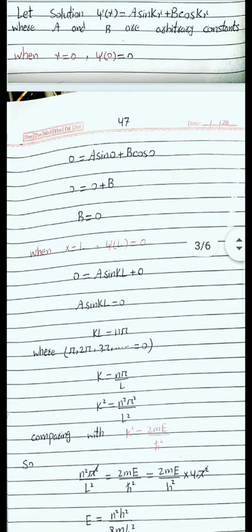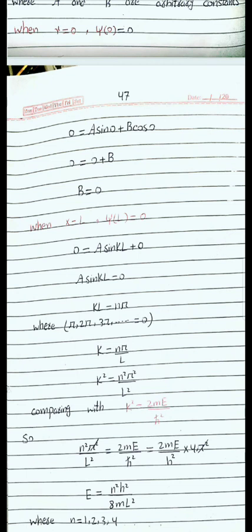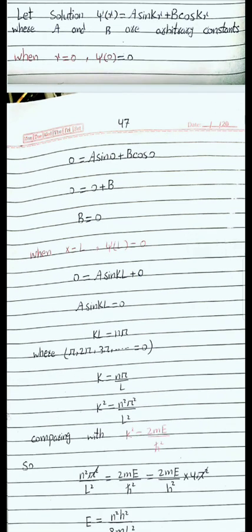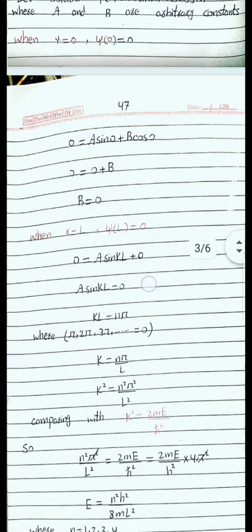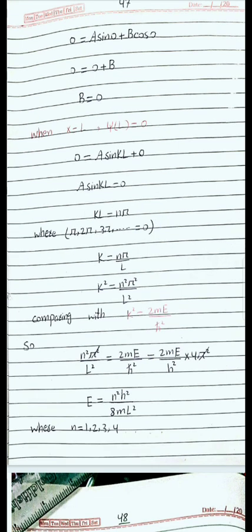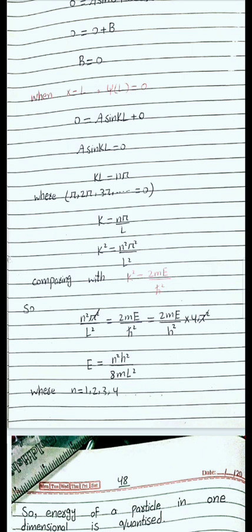Now we apply the second boundary condition: at x = L, ψ = 0. Since B = 0, the cos(kx) term is eliminated, leaving ψ(x) = A sin(kx). Setting ψ = 0 at x = L gives A sin(kL) = 0, so kL = nπ, where n = 1, 2, 3, ... Therefore k = nπ/L, and k² = n²π²/L².